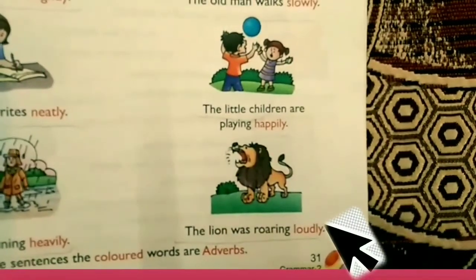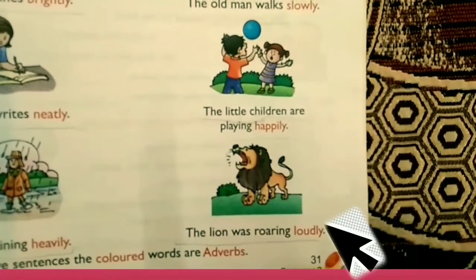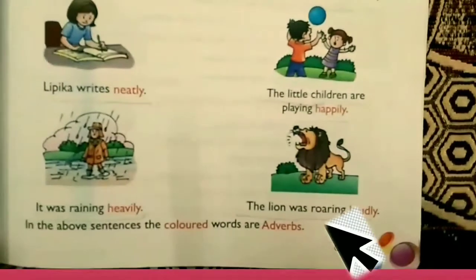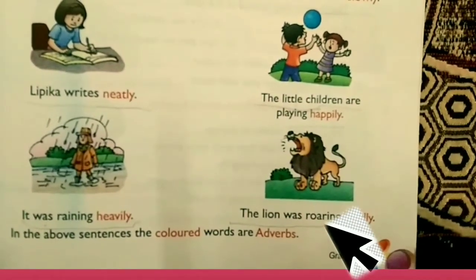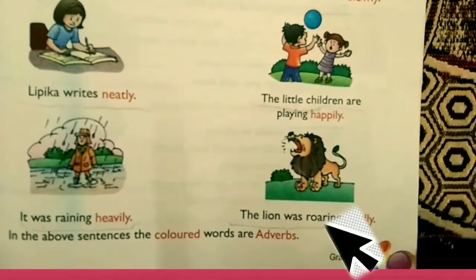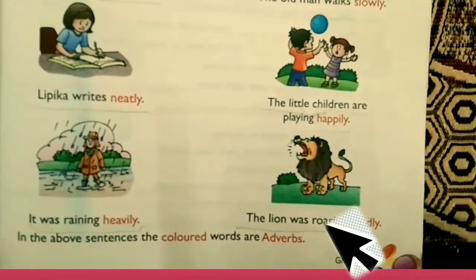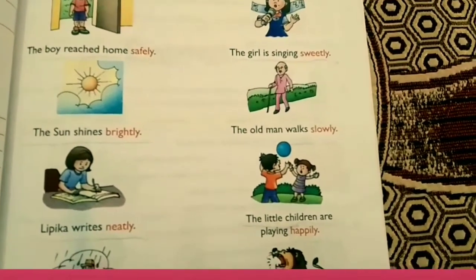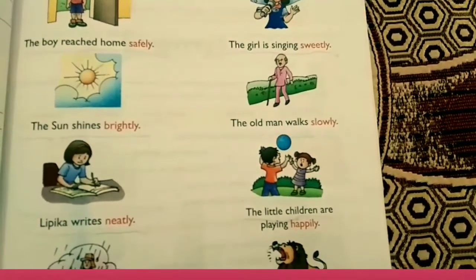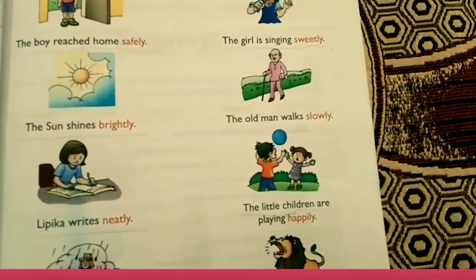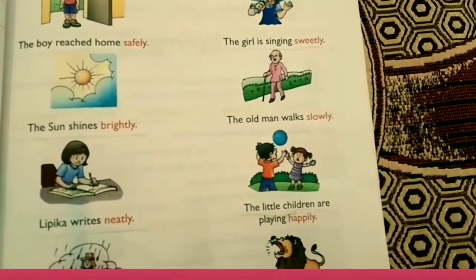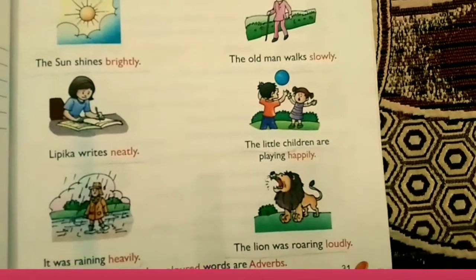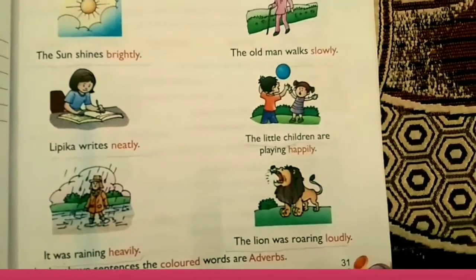It was raining heavily. The lion was roaring loudly. In the above sentences, the colored words are adverbs: safely, sweetly, brightly, slowly, neatly, happily, heavily, loudly.